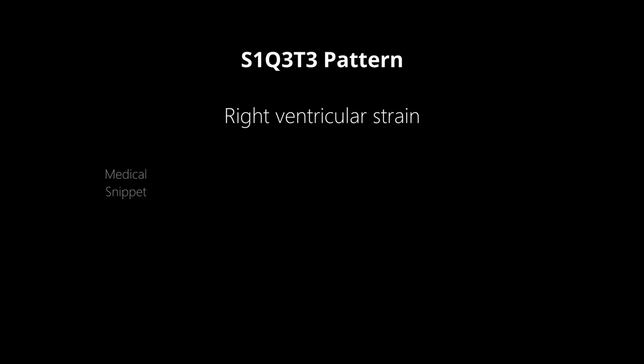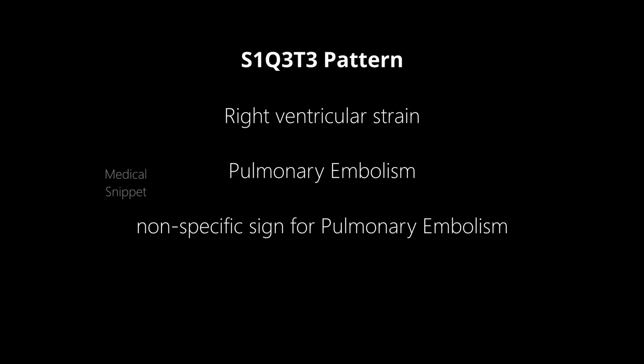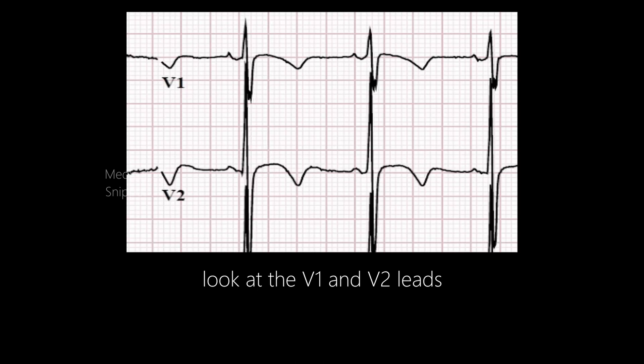The S1Q3T3 pattern denotes right ventricular strain. In other words, one should suspect pulmonary embolism. Though S1Q3T3 is not specific for pulmonary embolism, if it is present, one should look at V1 and V2 leads for T wave inversion.